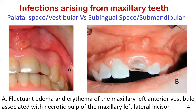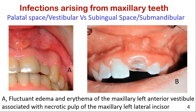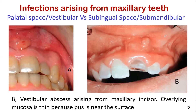Fluctuant edema and erythema of the maxillary left anterior vestibule associated with the necrotic pulp of the maxillary left lateral incisor. Vestibular abscess arising from the maxillary incisor — overlying mucosa is thin because pus is near the surface.